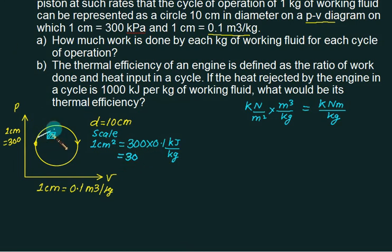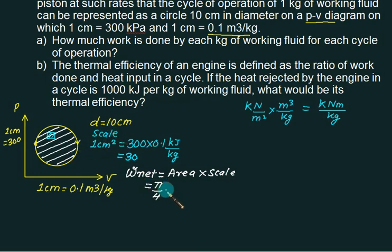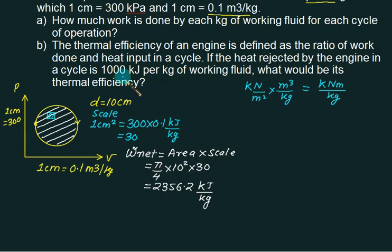My question is this: Can we find out the area of this total? This area is pi by 4 d square. Is the area under PV diagram for cyclic process? It represents the net work done. So indirectly, wnet is the closed area under PV diagram. This area has to be multiplied by scale because your diameter is 10 cm and we have different scales. So this is pi by 4 into d square, 10 square multiplied by 30. So this is the net work done.